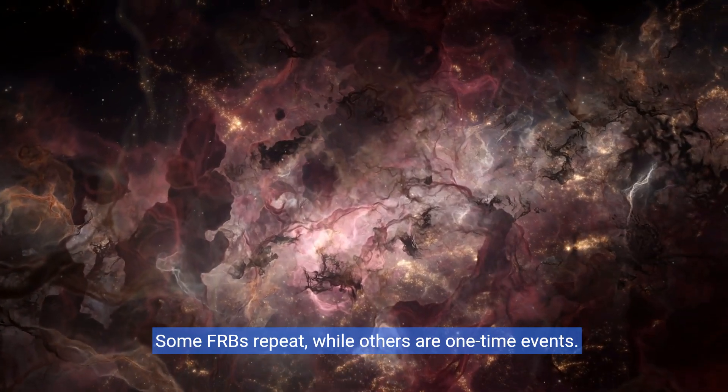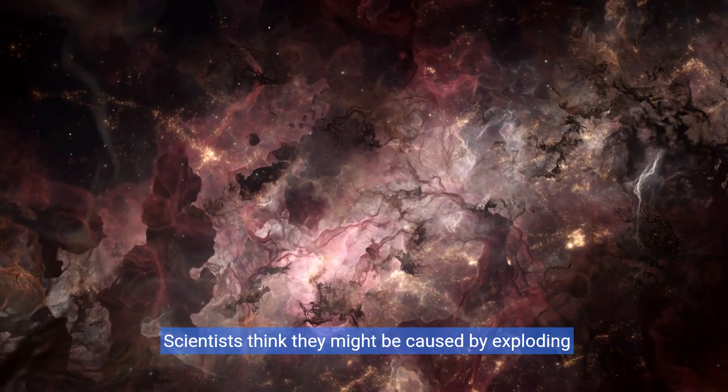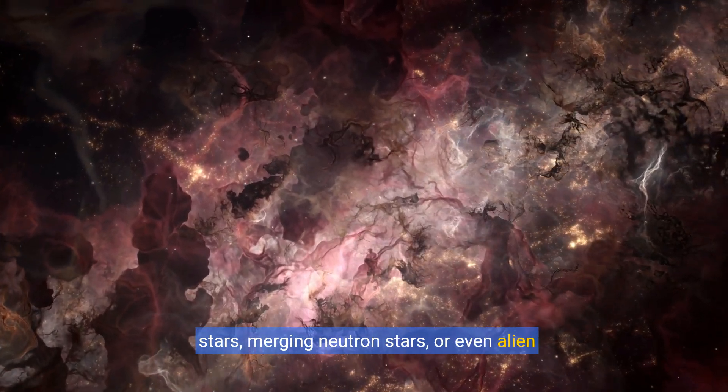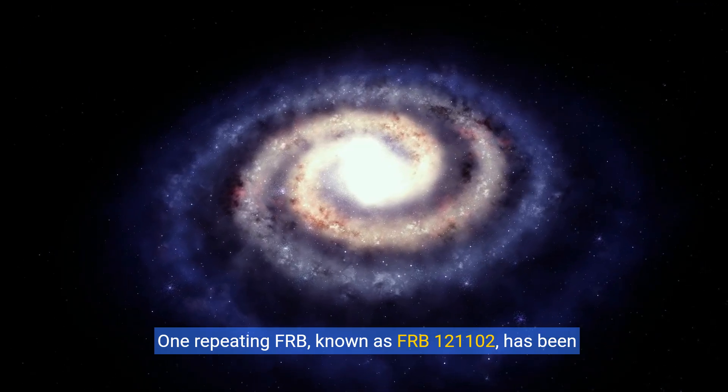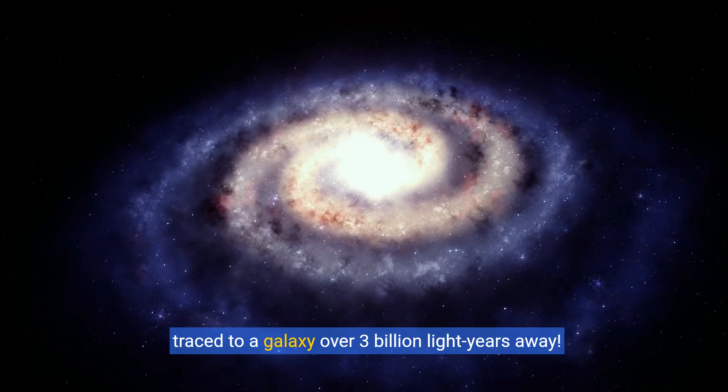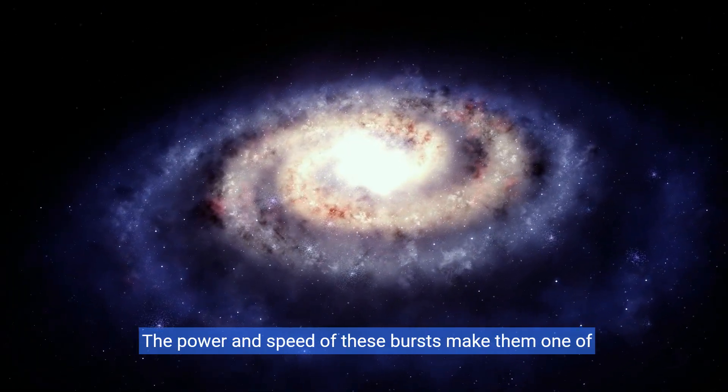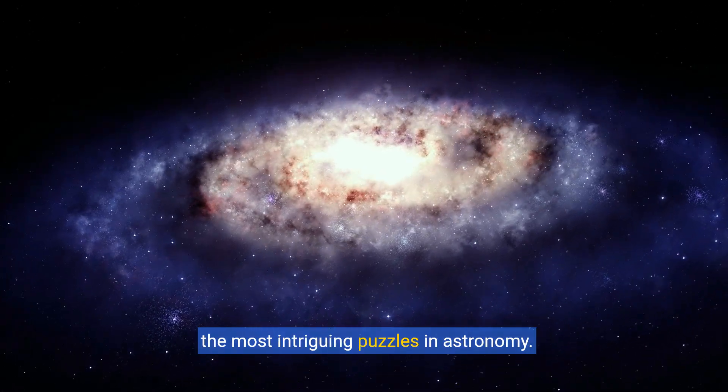Some FRBs repeat, while others are one-time events. Scientists think they might be caused by exploding stars, merging neutron stars, or even alien technology. One repeating FRB, known as FRB 121102, has been traced to a galaxy over 3 billion light-years away. The power and speed of these bursts make them one of the most intriguing puzzles in astronomy.